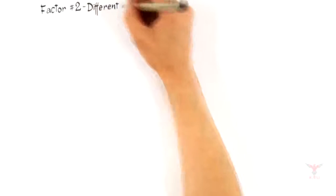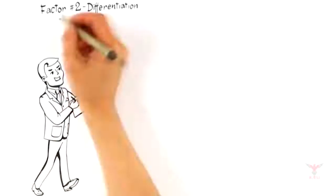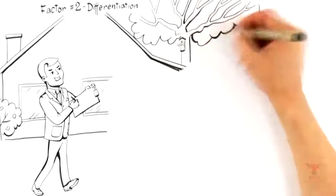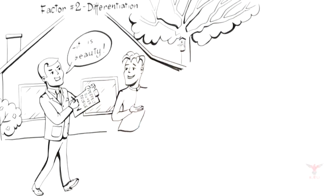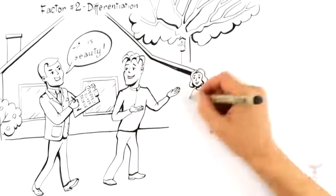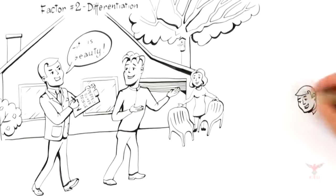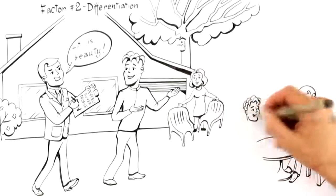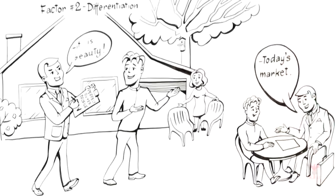This leads us to factor number two: differentiation. To attract the highest possible offer, a home must be positioned to attract buyers who will perceive its highest value. Expert advertisers understand that there is a perfect buyer profile for the buyer that would be willing to pay the most money for your home. Expert advisors attract these perfect buyers by differentiating your home from other homes on the market by first anticipating a buyer's wants and needs. As you'll notice, the key focus here is not on past market sales, but what is likely to attract a top-paying buyer in today's market.